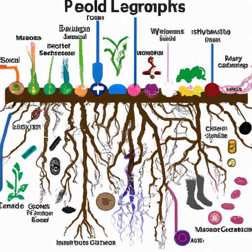To increase microbial activity in soil, farmers can take various steps like adding organic matter to the soil, reducing tillage, and avoiding the use of herbicides and pesticides. Farmers can also introduce microorganisms like bacteria and fungi into the soil. One popular method is to use compost, which is a mix of organic matter and microorganisms. Compost can help improve soil fertility by adding nutrients and microorganisms to the soil.